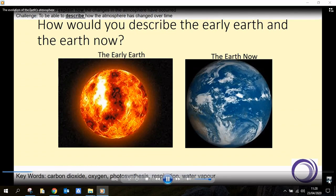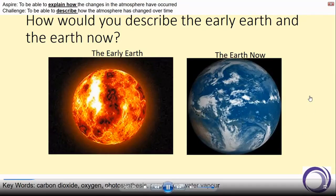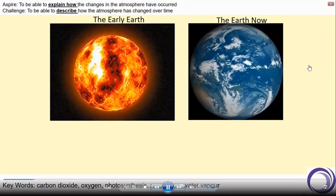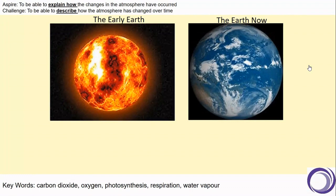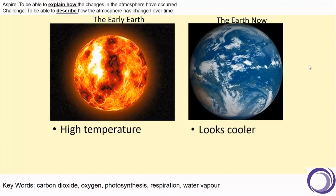So you may have had some ideas such as the early Earth looks really warm, so clearly it must have had a high temperature, whereas the Earth now looks a lot cooler in comparison.